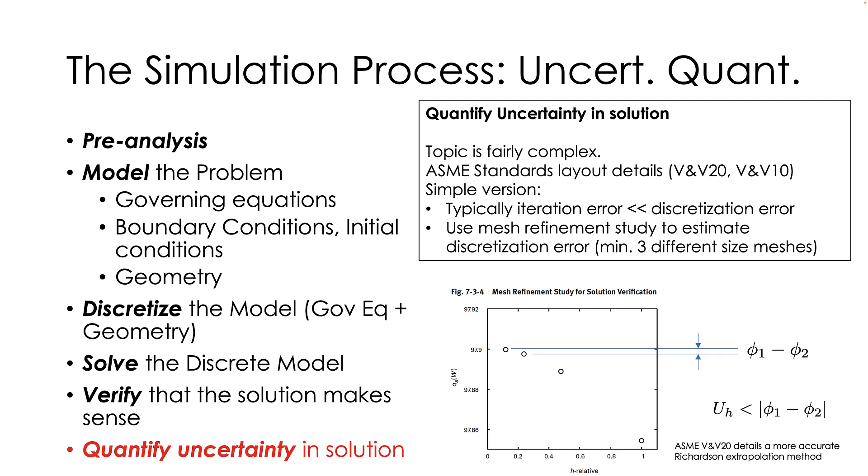To a relatively good approximation, the amount of error in the simulation is the difference between the value of the two finest meshes. So you take the finest mesh you did, look at its result, and the next to finest mesh that you did, take its result. The difference between those is basically the amount of discretization error.